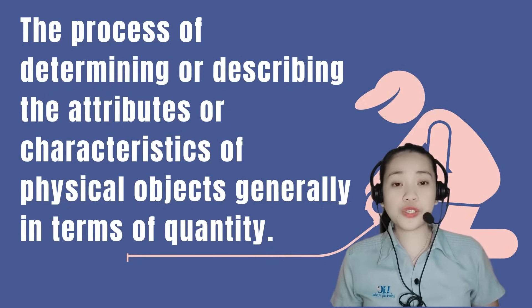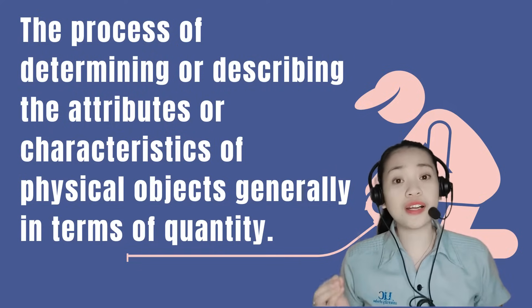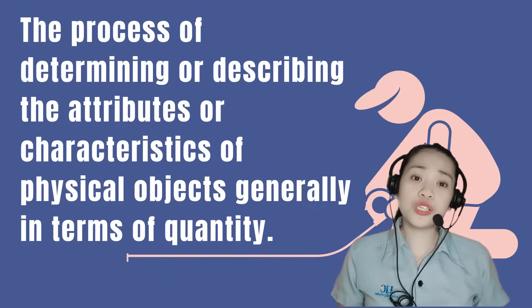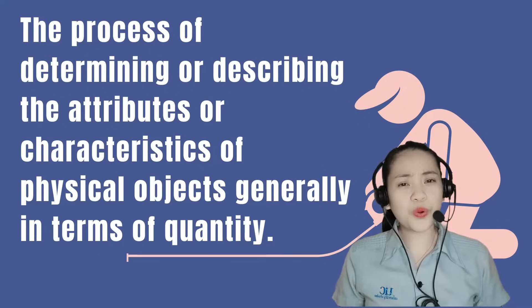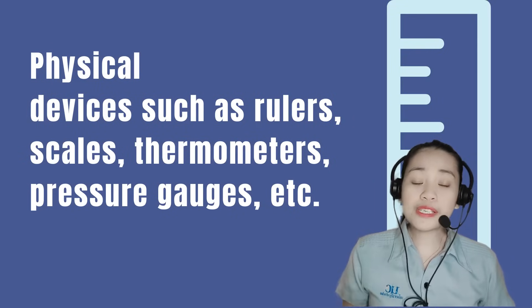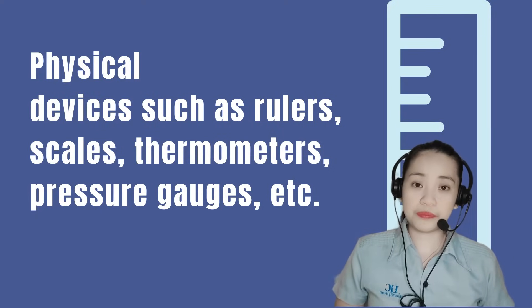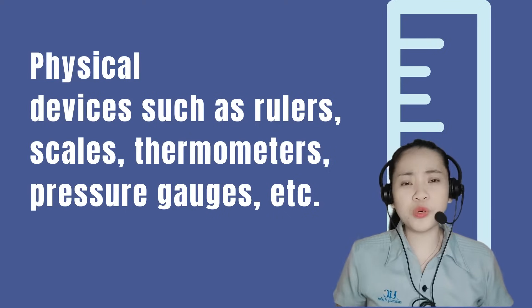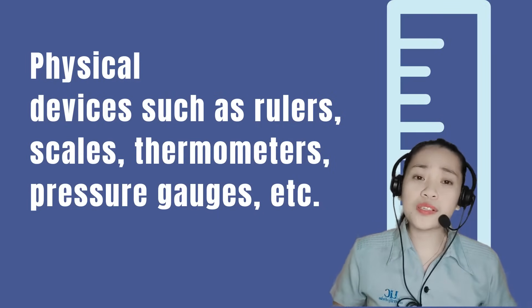Measurement, on the other hand, refers to the process by which the attributes or dimensions of some physical object are determined. When we measure, we generally use some standard instrument to determine how big, tall, heavy, voluminous, hot, cold, fast, or straight something actually is. Standard instruments refer to physical devices such as rulers, scales, thermometers, pressure gauges, and so on. We measure to obtain information about what it is, and such information may or may not be useful depending on the accuracy of the instrument we use and our skill at using them.